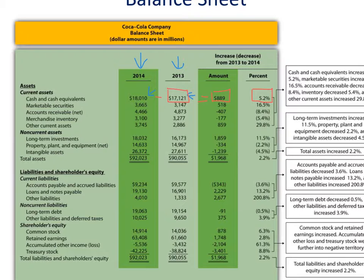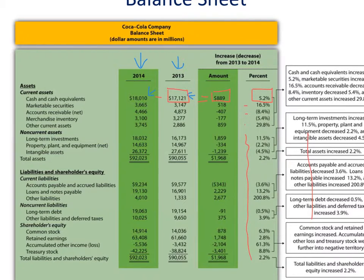To find the percent change, we take the amount of change — $889 million — and divide that by the base amount of $17,121 million, which gives us the percent change of 5.2%. This is done for each line item of the balance sheet, all the way down — showing both the dollar amount changes and the percent changes for Coca-Cola's balance sheet.